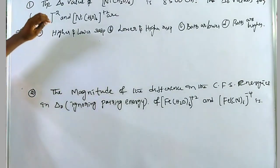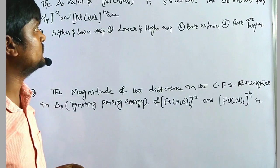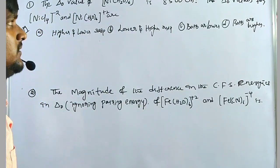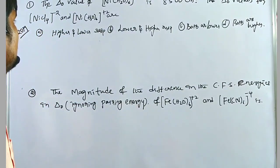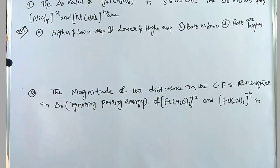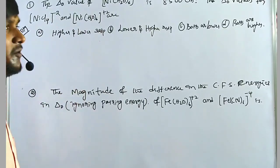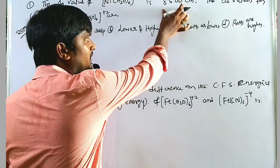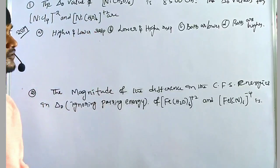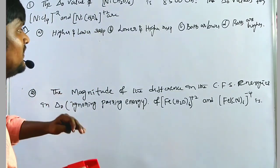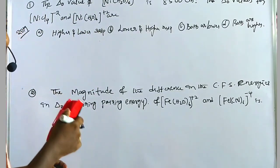The question is: the Δo value of Ni(H₂O)₆²⁺ is 8500 cm⁻¹. Then find the Δo values for Ni(Cl)₄²⁻ and Ni(NH₃)₆²⁺. Three different ligands are present. When ligand values are given, find these two values — they are not exact numbers, either in increasing or decreasing manner.